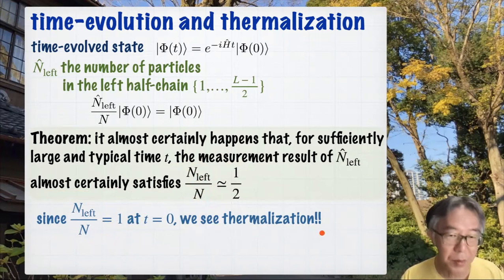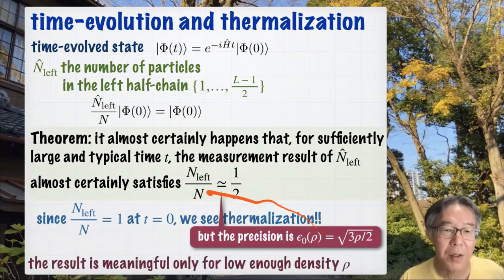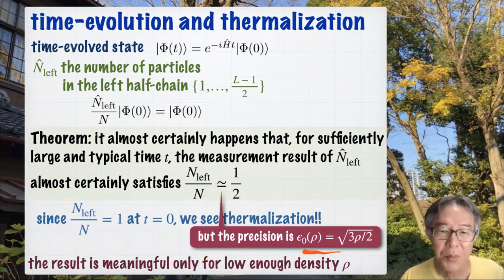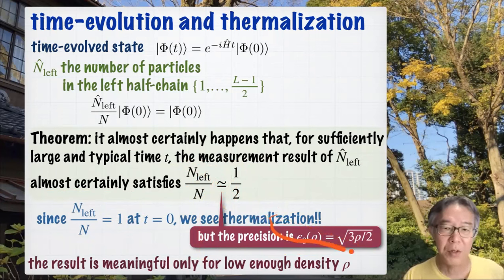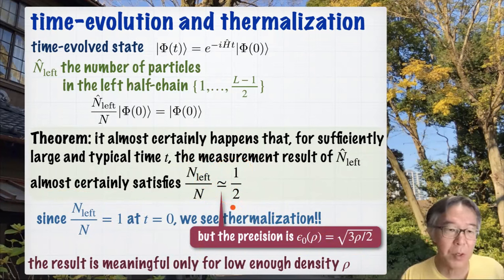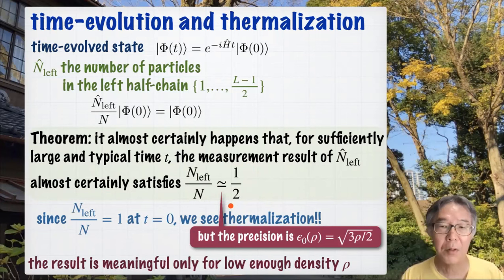I have to admit that this near equality is valid only with precision ε₀, and ε₀ may not be small if ρ is not small. So in order to say that we do have a thermalization result, we have to make ρ small enough to achieve the desired precision. But if you take ρ small enough, we do have a rigorous thermalization result without relying on any unproven assumption.